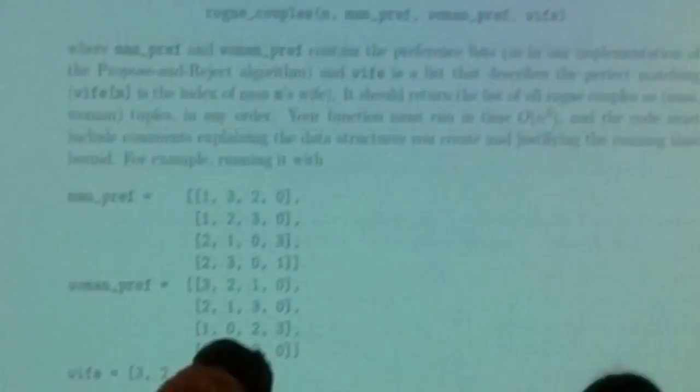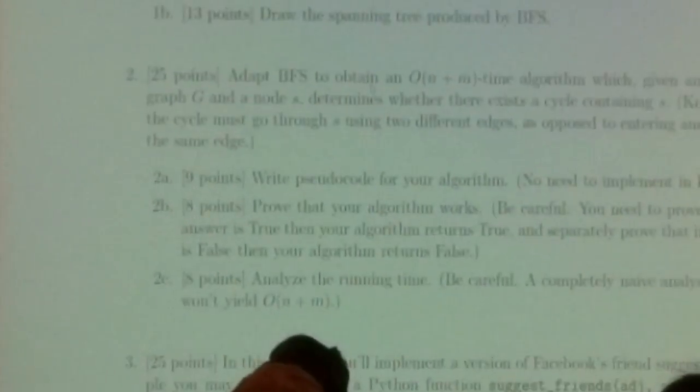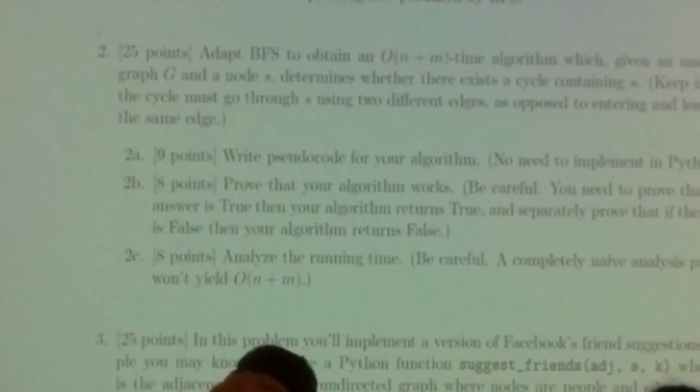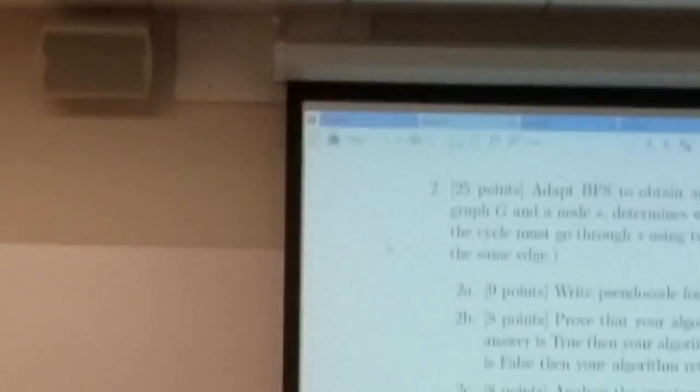The next one I wanted to illustrate was homework 4, problem 2. This was a bit of a tricky one. It's asking you, is it true or false — does there exist a cycle containing node S?